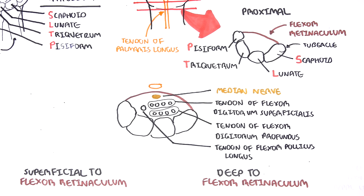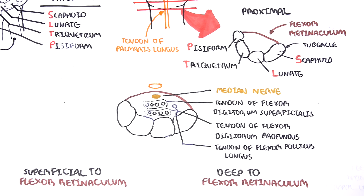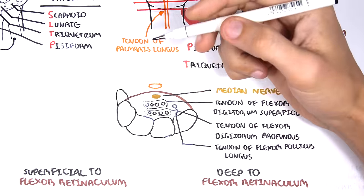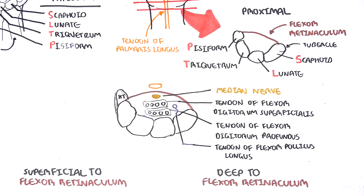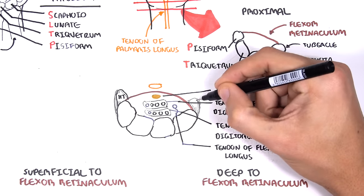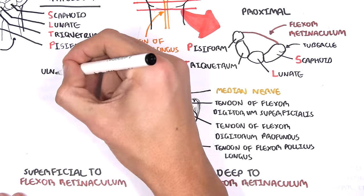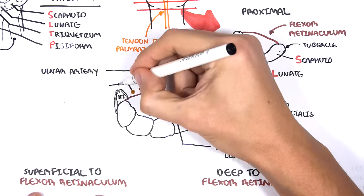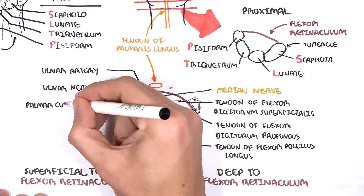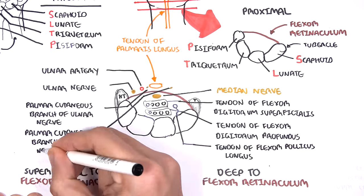I actually drew this wrong — the tendon of flexor pollicis longus should be on the right-hand side because that's the side of the thumb. Now let's look at the structures which run superficial to the flexor retinaculum. Adding the hook of hamate and the trapezium — these are the distal carpal bones. The structures that run superficial to the flexor retinaculum include the tendon of palmaris longus. Because we are looking at the right hand, the ulnar structures are on the left side, medially — so here is the ulnar artery and the ulnar nerve. The palmar cutaneous branch of the ulnar nerve and the palmar cutaneous branch of the median nerve can also be found on the other side.